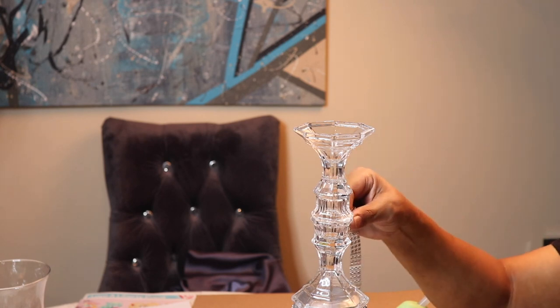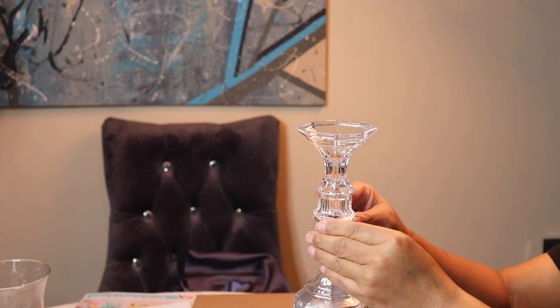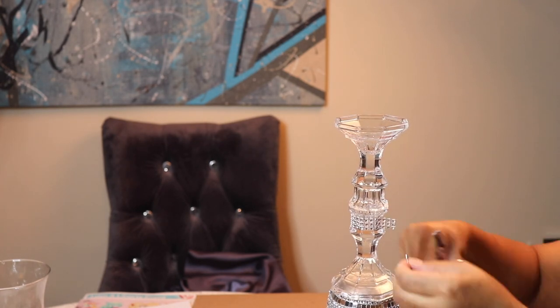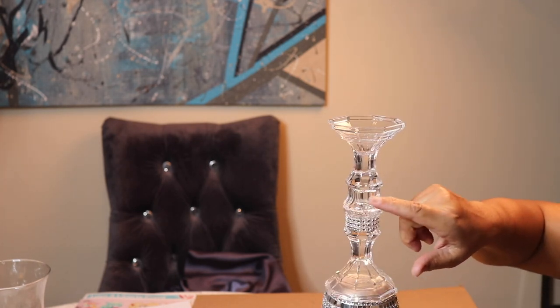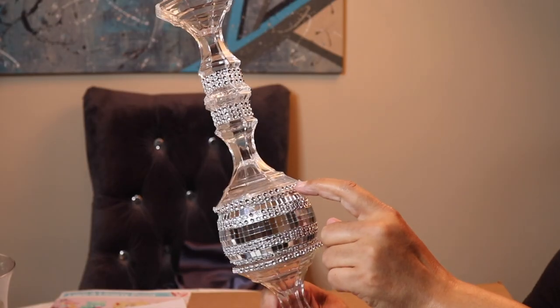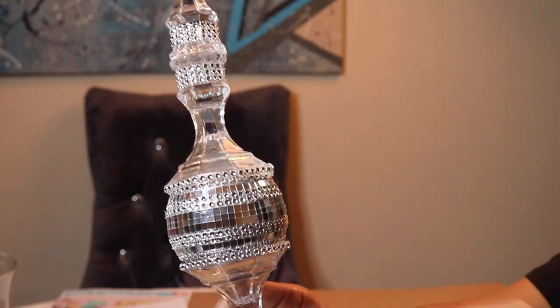I felt like the candle holders were a little bit plain, so I decided to add some more bling wrap to them. As you can see, I used about three rows of the bling wrap, added some hot glue to it, wrapped it around, added more hot glue and then cut off the excess. I added the bling to each neck of the candle holders. I added one row of the bling around the base of the candle holders as well.